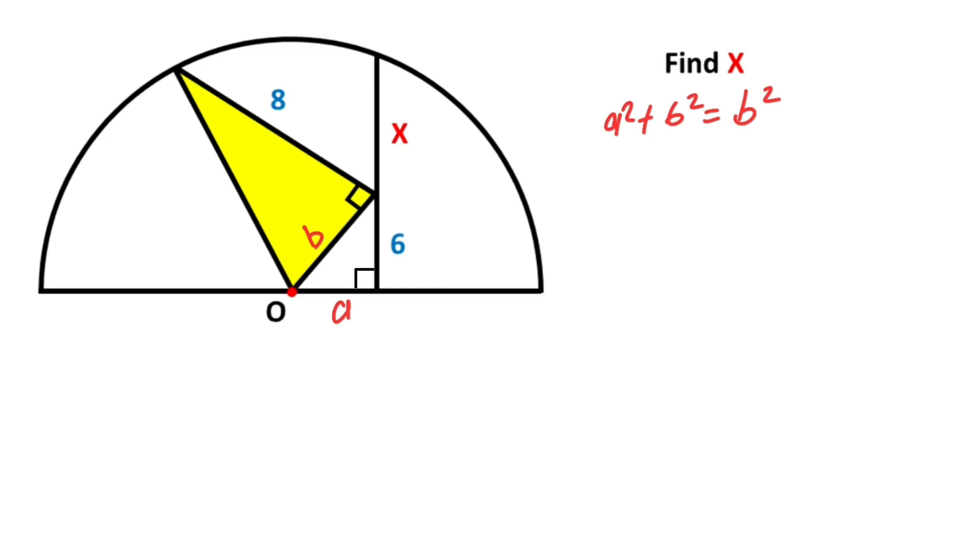If you notice, this length is the radius. For this triangle, if we apply the Pythagorean theorem, b² + 8² = r². After that, if we connect these two corners like this...